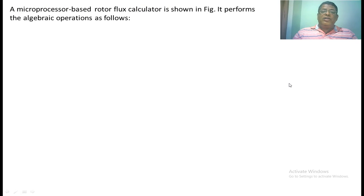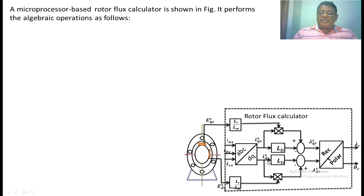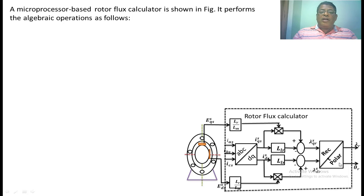Here we show the microprocessor-based rotor flux calculation. This is the stator winding and this is the rotor. On the stator, the D axis and Q axis have two Hall effect sensors placed on them, which measure the air gap flux. The rotor flux calculator block converts the stator currents into Iqs and Ids — that is, the stator currents transformed into the DQ stator frame. This block then converts the rotor flux on the stator frame, giving the Q component and D component. We use rectangular-to-polar conversion to obtain Lambda_r and theta_r. This entire block is the rotor flux calculator.